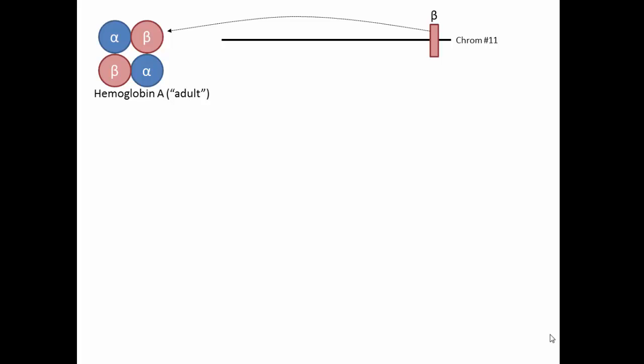The beta globin is on chromosome 11, and duplicated alpha genes are on chromosome 16.